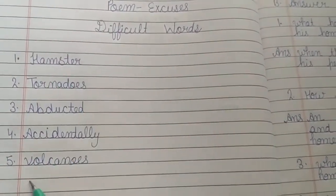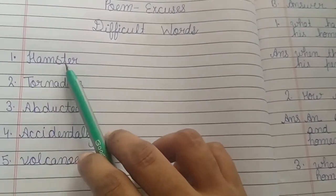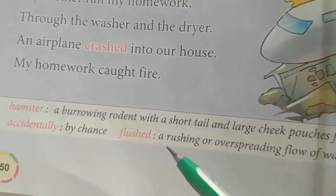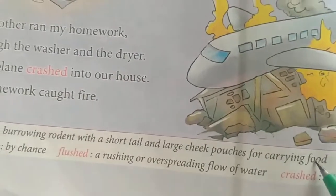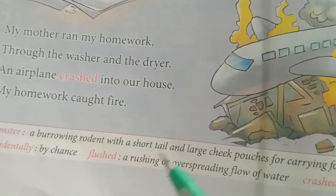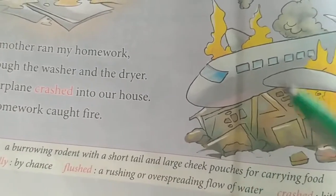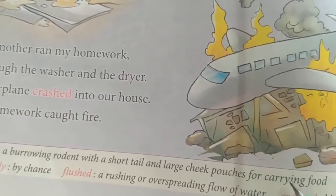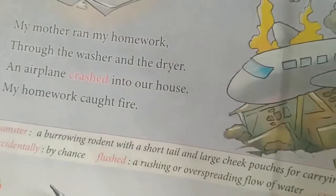There are total five difficult words. The first is 'hamster' — H-A-M-S-T-E-R. A hamster is a burrowing rodent with a short tail and large cheek pouches for carrying food. A rodent is like a rat. Burrowing means it can dig a hole. Pouches means its cheeks are like a bag which can carry food.